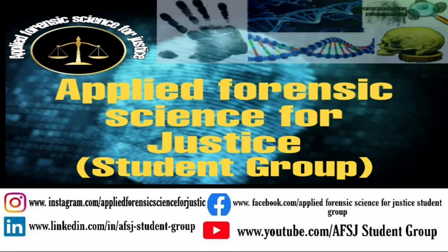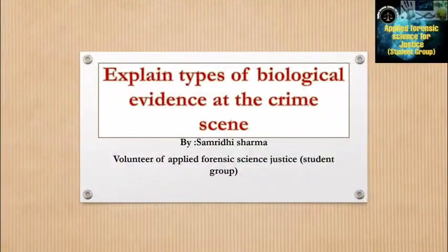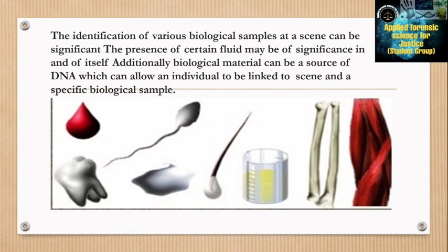Hello everyone, welcome to our YouTube channel Applied Forensic Science for Justice Student Group. I am Samridi Sharma, a volunteer of Applied Forensic Science for Justice Student Group. Today I will explain types of biological evidence at the crime scene. The identification of various biological samples at a scene can be significant, and biological material can be a source of DNA which can allow an individual to be linked to a scene.